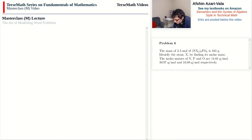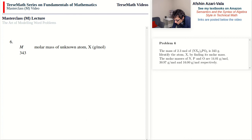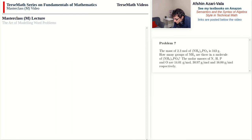Problem 6: the mass of 2.3 moles of (NX₄)₃PO₄ is 343 g. Same goal, but now it's 2.3 moles. With M representing the molar mass of X: 343 = 2.3 × [3(14.01 + 4M) + 30.97 + 4(16)]. The mass of one mole goes inside square brackets, multiplied by 2.3.